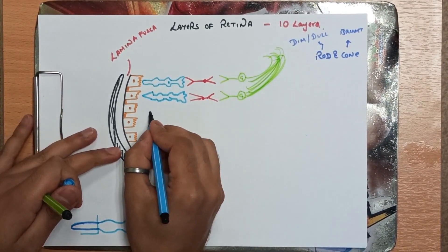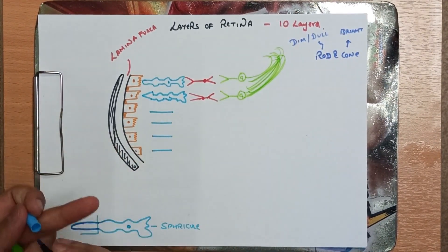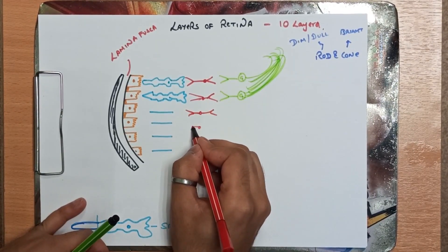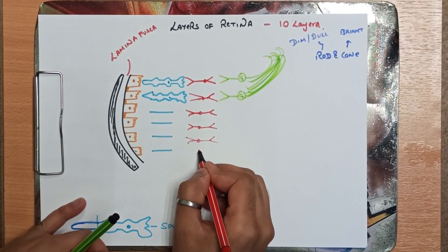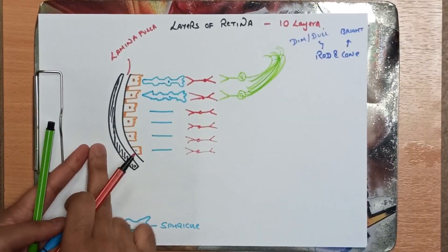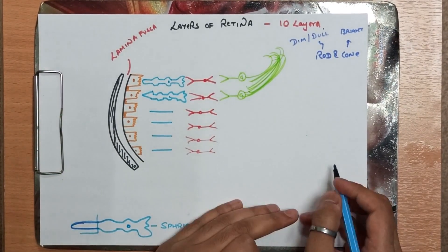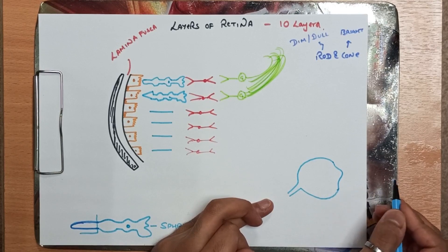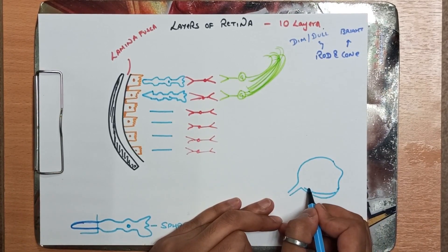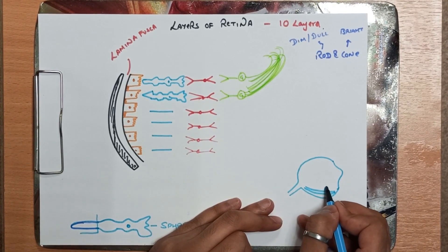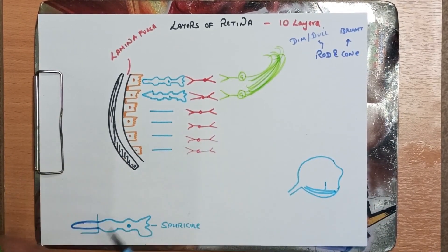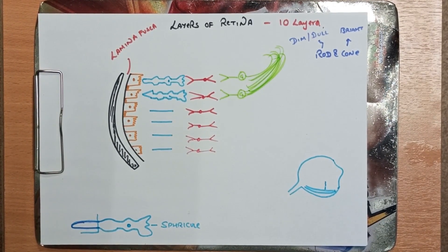So suppose this is one rod, this is cone, this is rod, this is cone — then bipolar, bipolar, bipolar. Note that this is from outer to inner side. In the eyeball, from outside inward: sclera, then choroid, then pigmented cell layer, then rods and cones, then bipolar cells, then ganglion cells. This is the outer to inner arrangement of the retina.